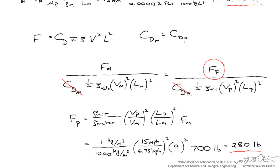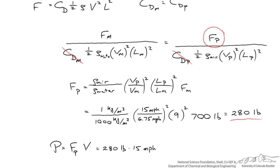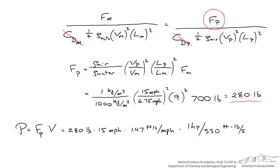On a laboratory scale, it's easier to handle something nine times smaller and make more sophisticated measurements. Finally, the power needed is the drag force on the prototype times its velocity. The estimated drag force is 280 pounds and its speed is 15 miles an hour. Applying conversion factors to get from miles per hour to foot-pounds per second — the dimensions of power — and converting to horsepower, the power needed by the blimp's engines is 11 horsepower.